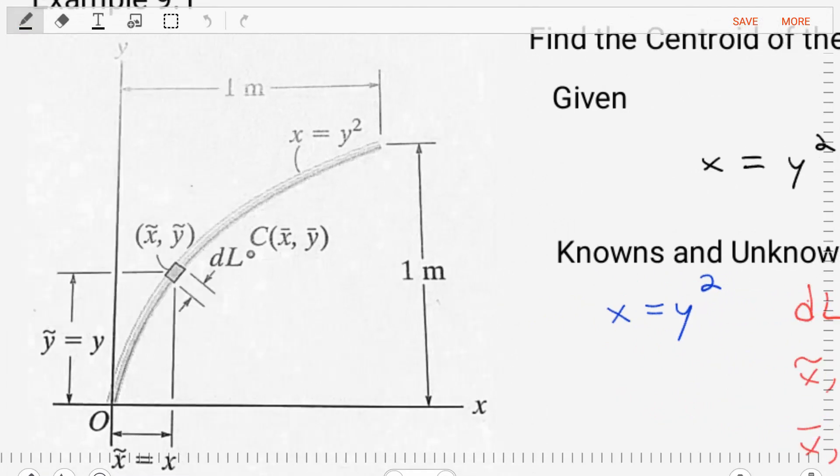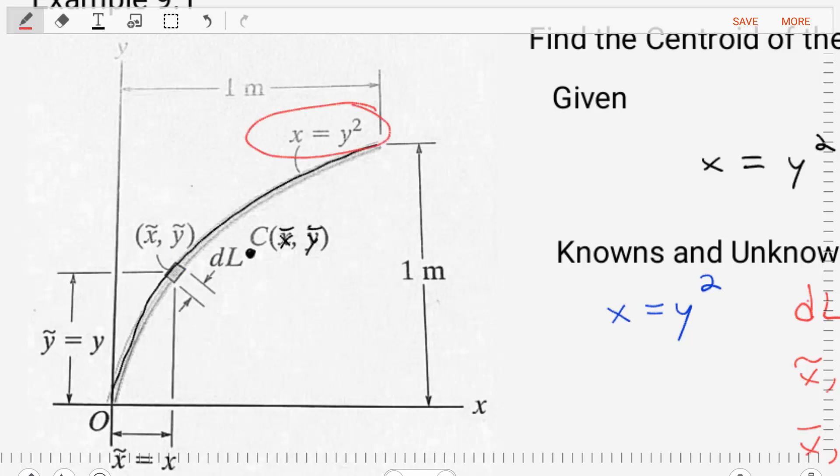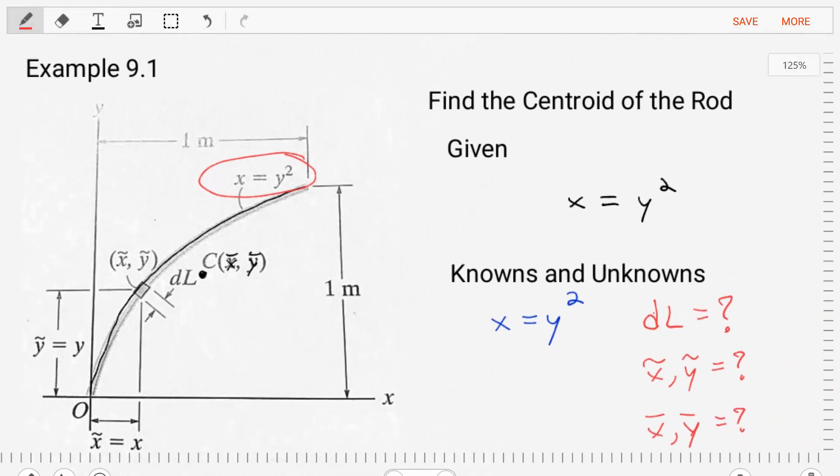This rod we can describe as a line. Its centroid, x-bar and y-bar, exists somewhere below the line. The line is described as an equation x is equal to y squared. And so we need to find the centroid, the x-bar and y-bar for this line. All right, so let's get started.